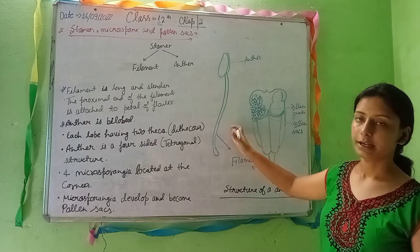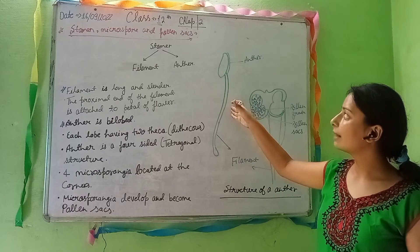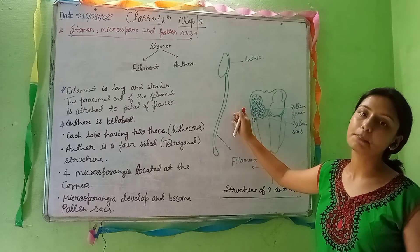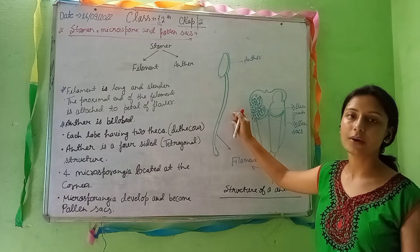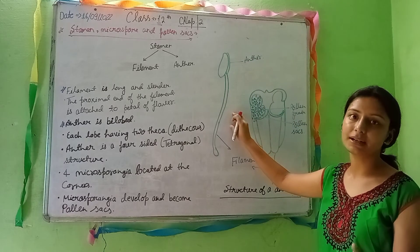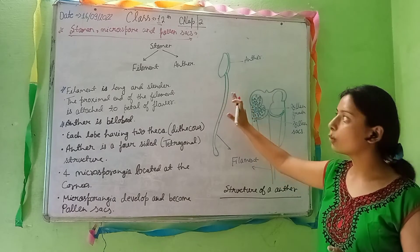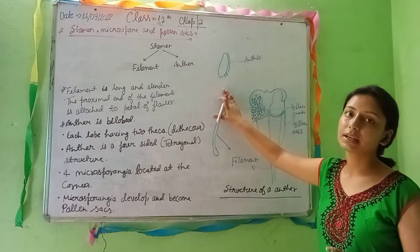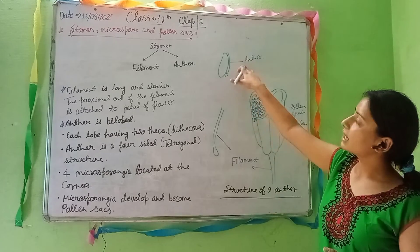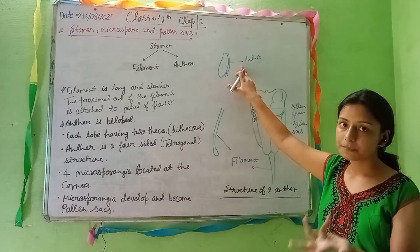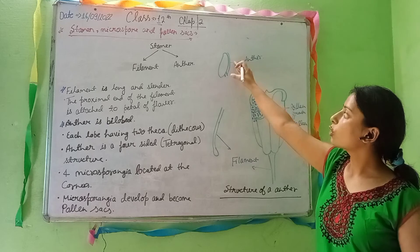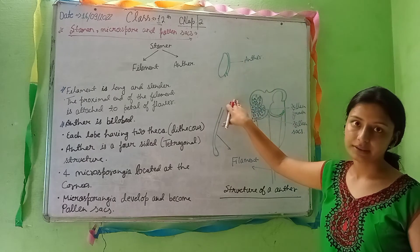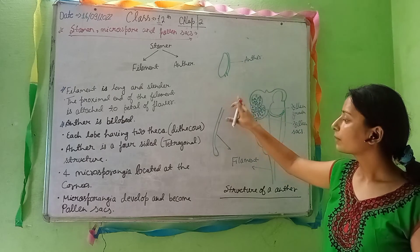Now let's discuss the filament. The filament connects the anther to the flower. Without the filament, the anther cannot be attached to the flower. So the filament is the stalk-like structure supporting the anther.